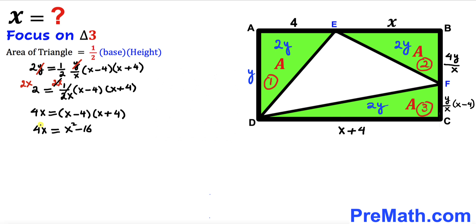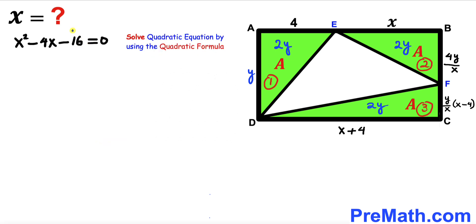Moving 4X to the other side, we get X squared minus 4X minus 16 equals 0. We have a quadratic equation and will solve it using the quadratic formula.